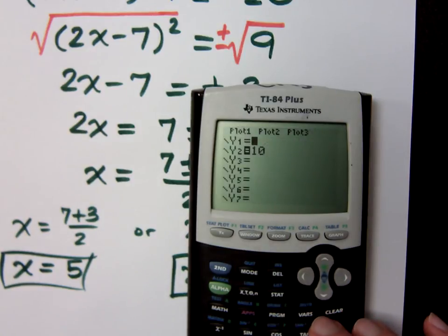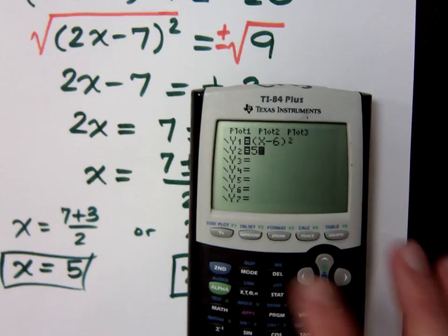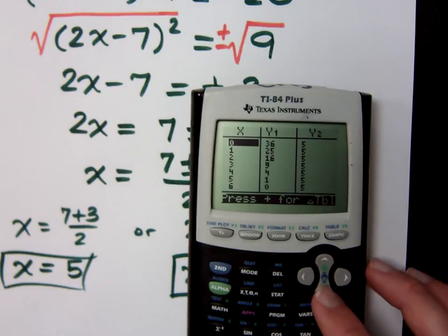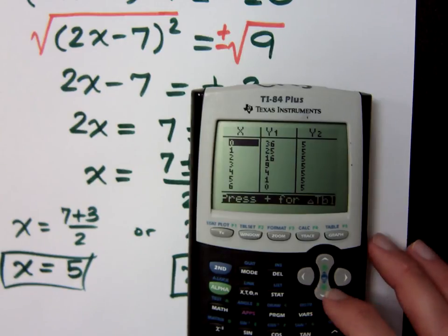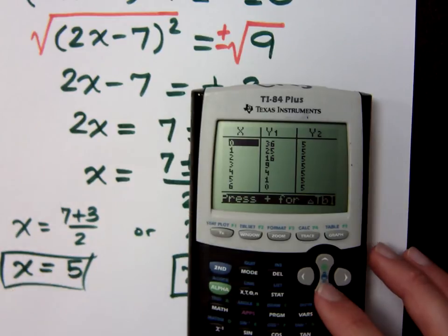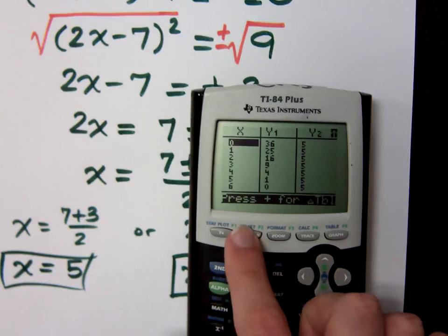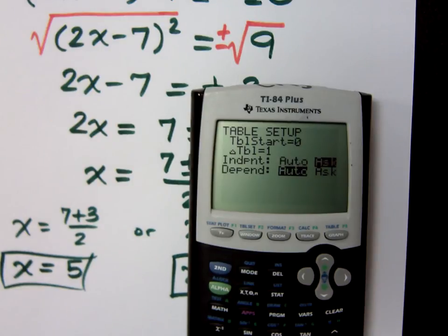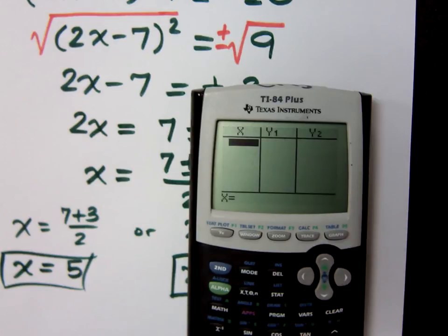The last example was x plus 6 squared equals 5. It's going to be difficult for you to find where they intersect, because the solutions were weird and wonky last time, right? Because we were decimals. But you know what you can do? You have control. If you change the table setup by pressing second window, you can change your independent variable, which is your x, to ask. Just trust me. If you turn it to ask and go back to your table, there's nothing here. This table, when you set it to ask, will only be populated with what you tell it to put in there.